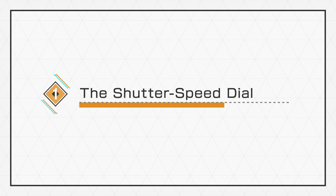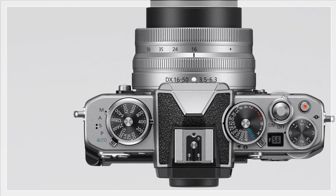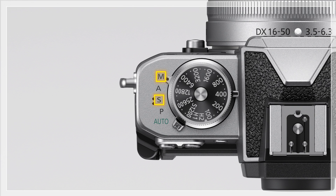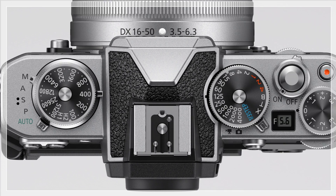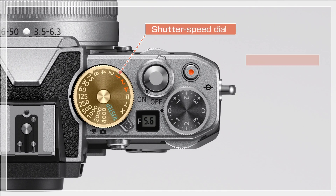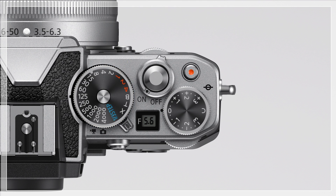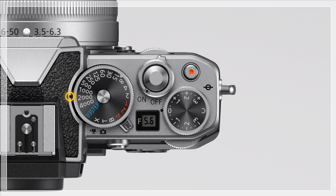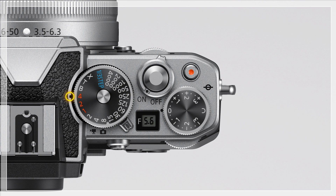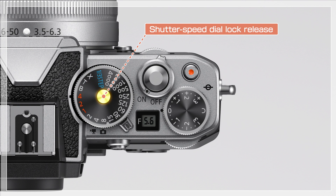First, the shutter speed dial. Modes S and M let you choose the shutter speed yourself. Rotate the shutter speed dial to choose a shutter speed. Fast shutter speeds freeze motion, while slow shutter speeds suggest motion by blurring moving objects. To choose these settings, you'll need to hold the shutter speed dial lock release while rotating the dial.